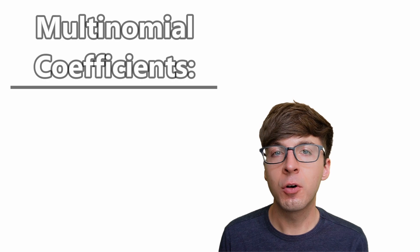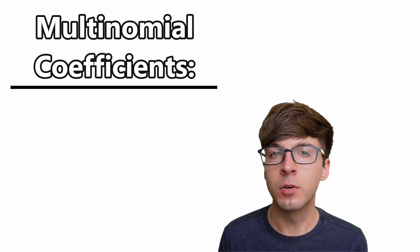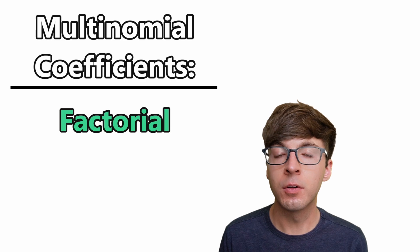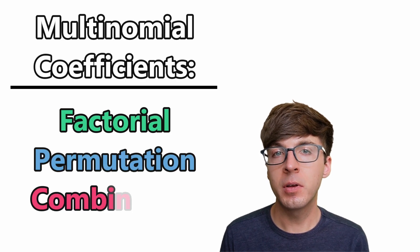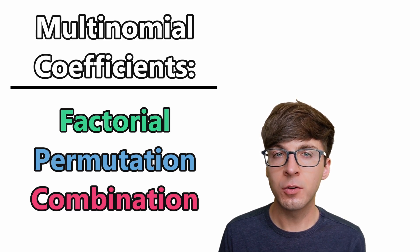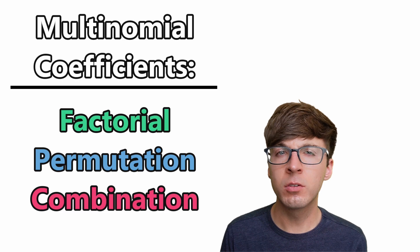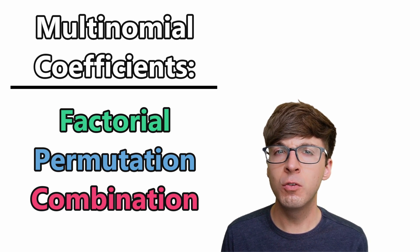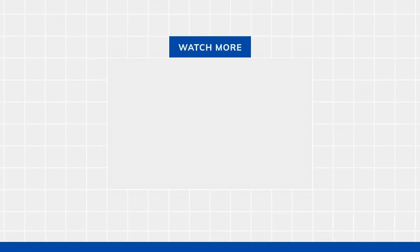So the multinomial coefficient is a powerful counting tool that includes the factorial, the permutation, and the combination as special cases, and also allows us to solve more types of problems that would otherwise require modification of those three tools. A huge plus is that the notation and formula line up perfectly. Thanks for watching, subscribe for more, and I'll see you in the next one.